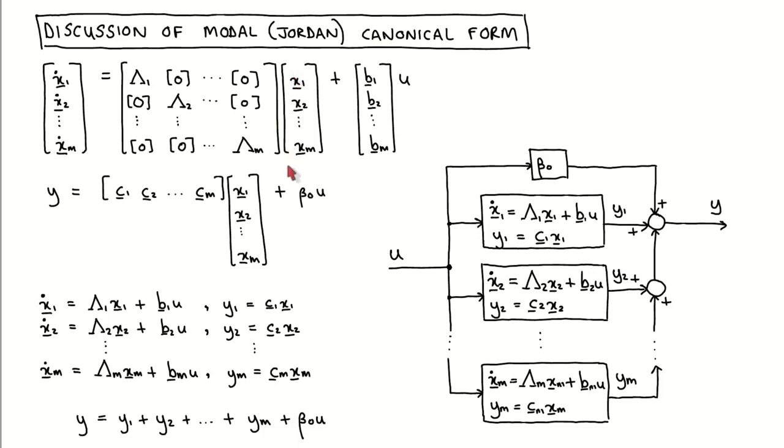The state vector is divided up into a number of smaller vectors that correspond to the diagonal blocks. The B vector and C vector are similarly divided into smaller vectors.